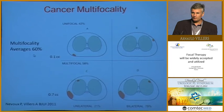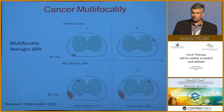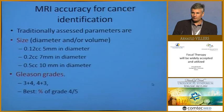Cancer multifocality averages 60% of cases and is bilateral in more than 80%. A patient may have a negative 12-core extended biopsy series and be reassured, yet still have a small cancer present in up to 40% of cases. Bilaterality shows it is not necessary to treat the entire lobe to destroy a significant cancer, because in more than 80% of cases the secondary cancer will be contralateral. MRI is accurate for cancer identification.